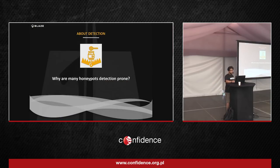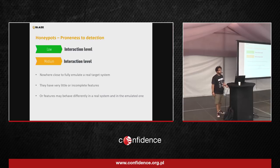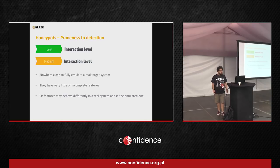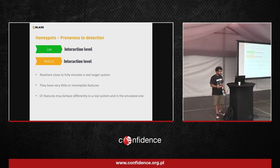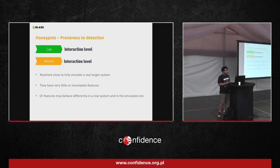Why are they detection-prone? Low and medium interaction honeypots are nowhere close to emulating a full real target system. They have lots of incomplete features. Also, some implementations are not compliant with the RFCs.